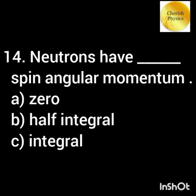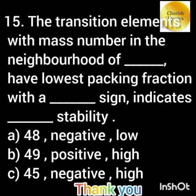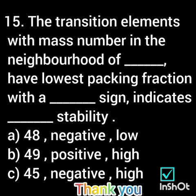Neutrons have half-integer spin angular momentum. The transition element with mass number in the neighborhood of 56 has the lowest packing fraction with a negative sign, indicating maximum stability.